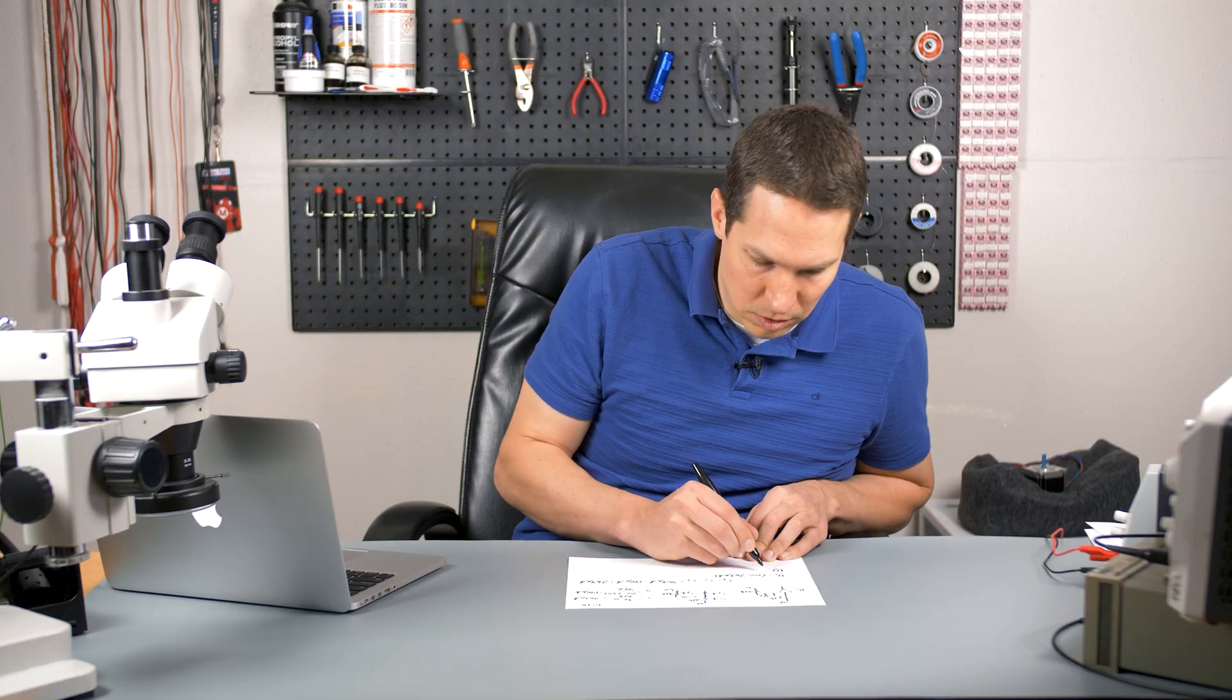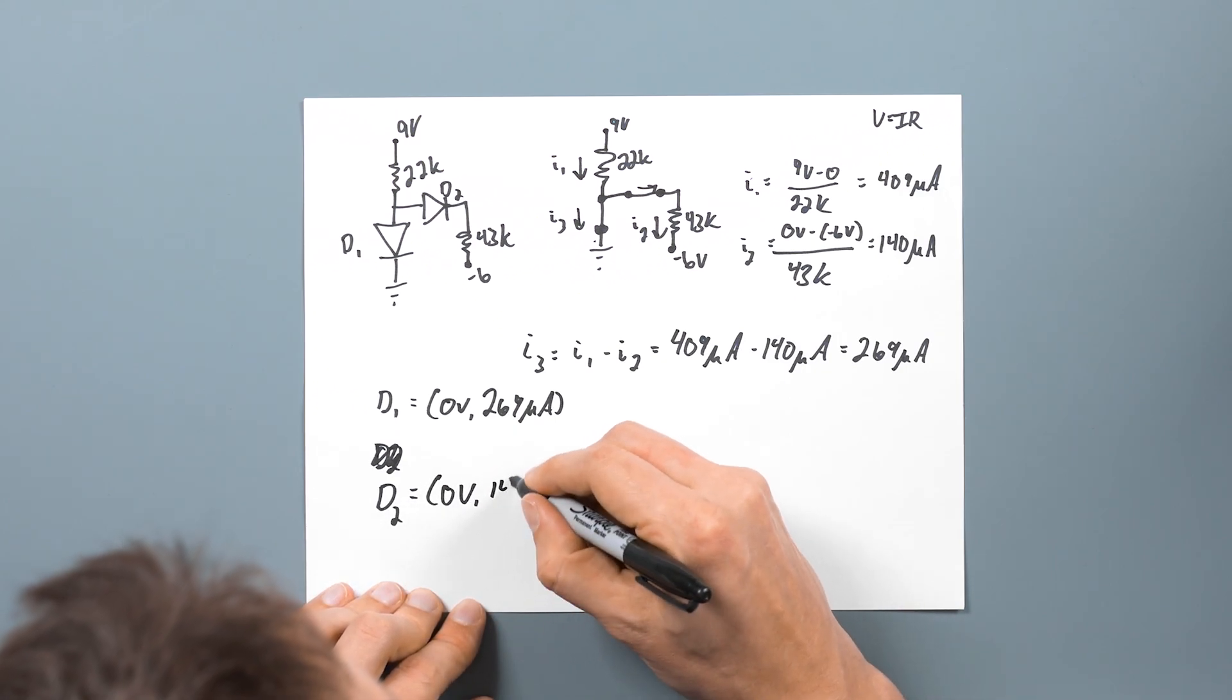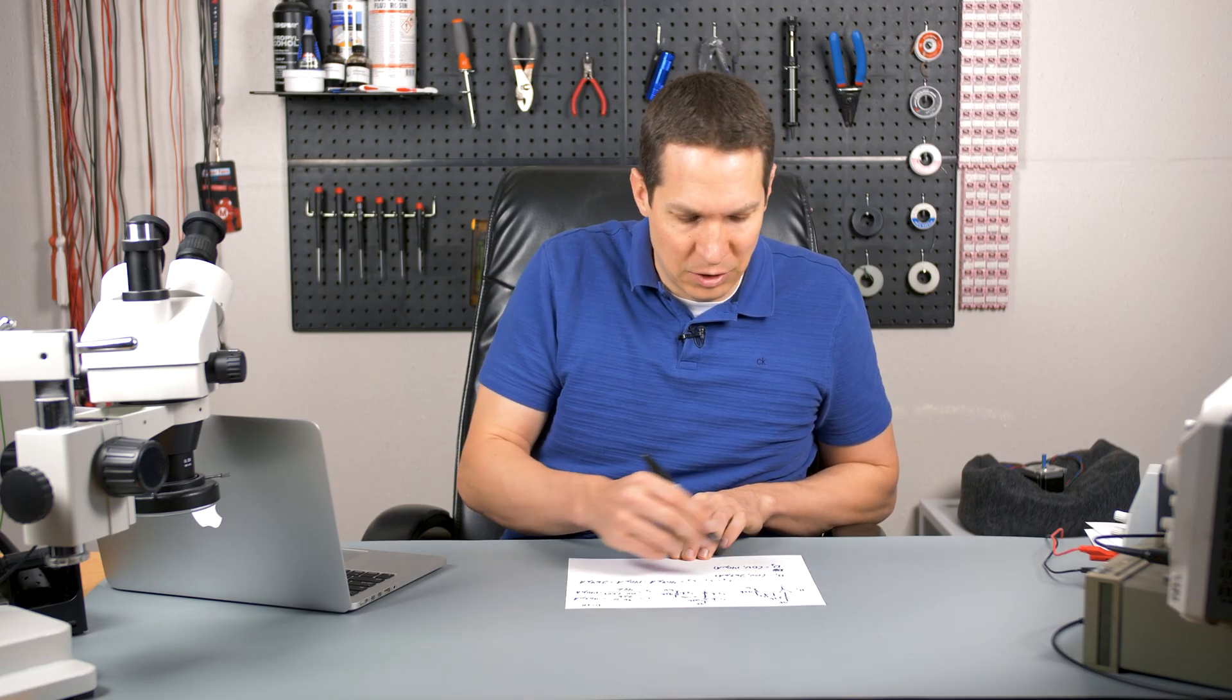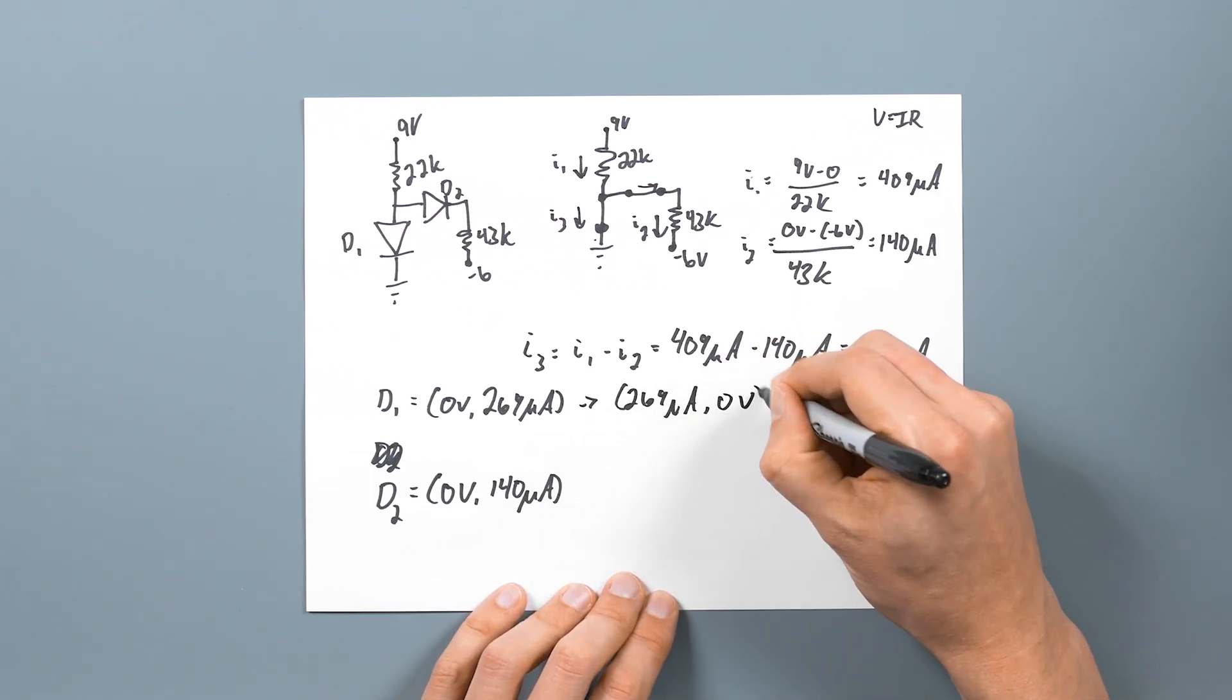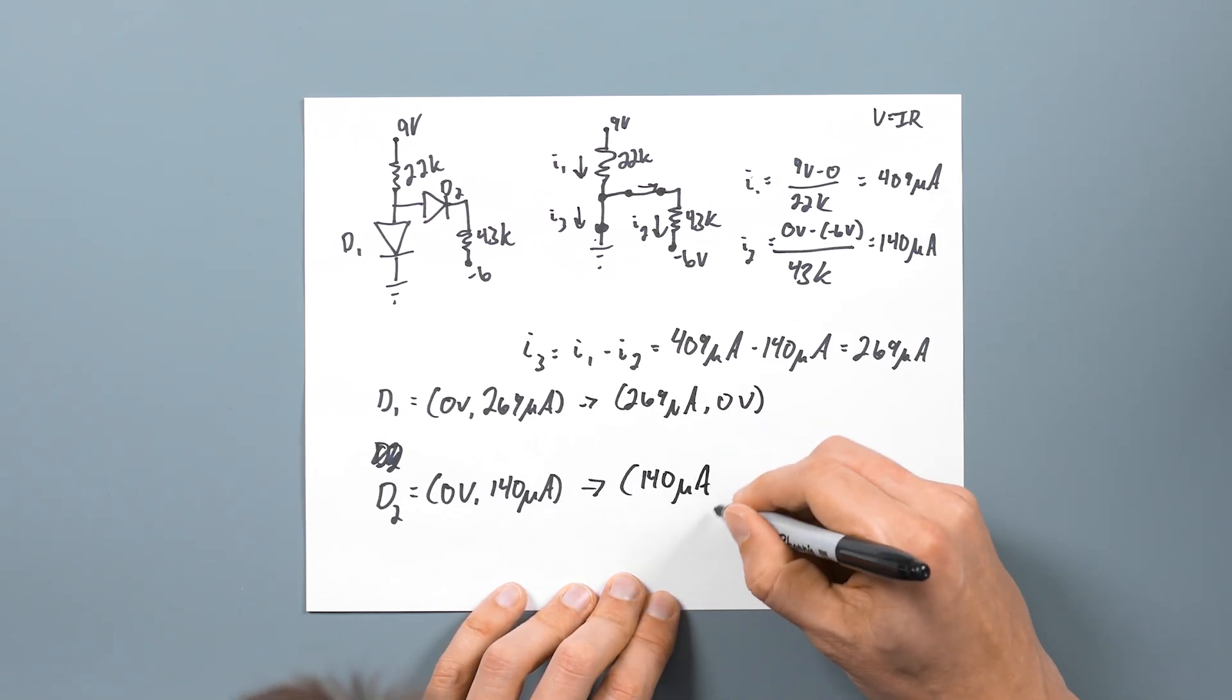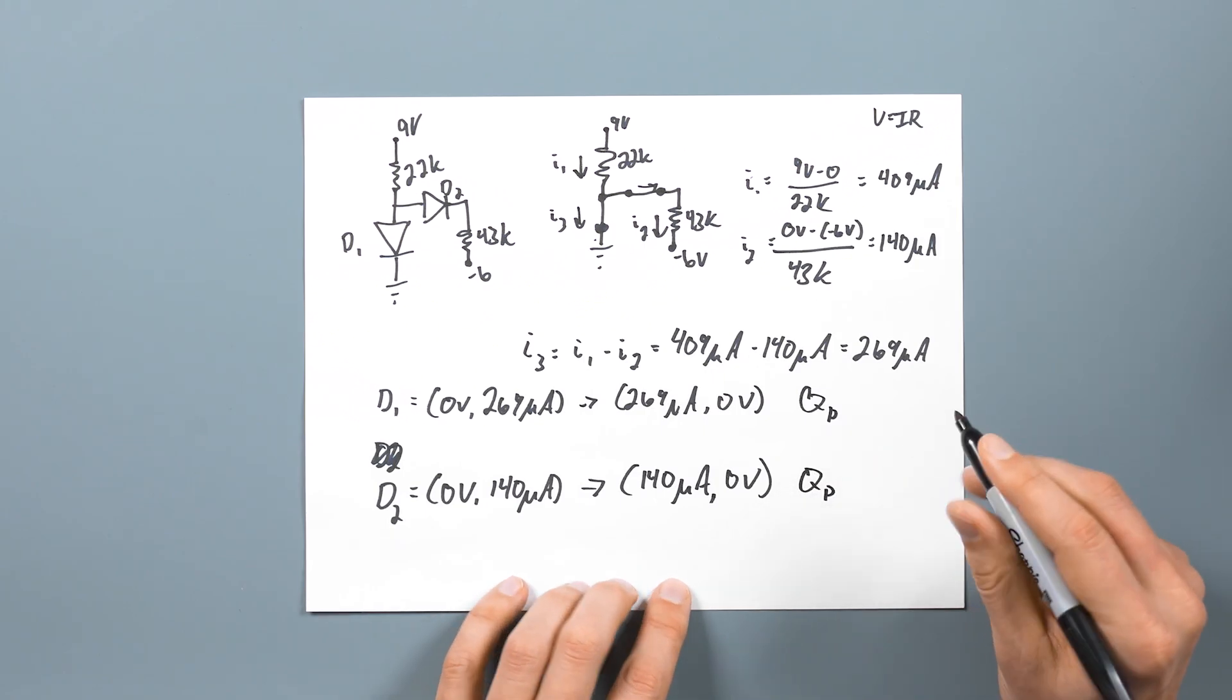And our current is going to be 269 microamps. And D2 - wow, I'm just having one of those days. D2 is also going to be zero volts and 140 microamps. Now, frankly, the way I did this, I often see it done another way where you actually have the current first. I'm used to just doing volts and amps. But you might see it where people say, hey, actually do current first, so 140 microamps, and then zero volts. And that will be your Q-point for diode one and your Q-point for diode two.